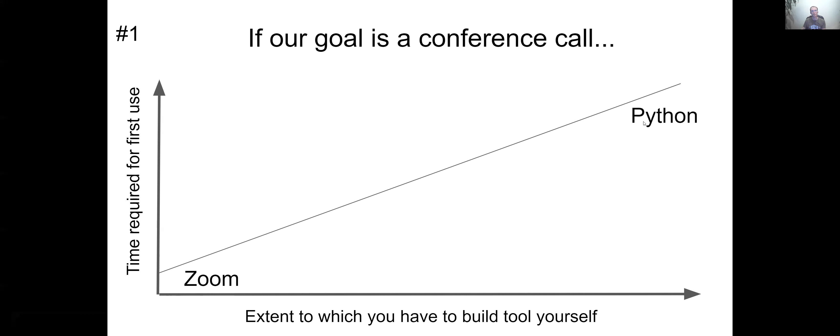Where would we put Python? Python is a scripting language, so just by nature of being a scripting language, if we wanted to use Python to do a conference call, we'd have to build the equivalent of Zoom using Python, which is possible. So the extent to which we have to build the tool ourself is really high. And the amount of time required for first use, even if you're super good at Python, you might as well just use Zoom if you're going for speed and for convenience. So Zoom is sort of the winner here, further down and to the left.